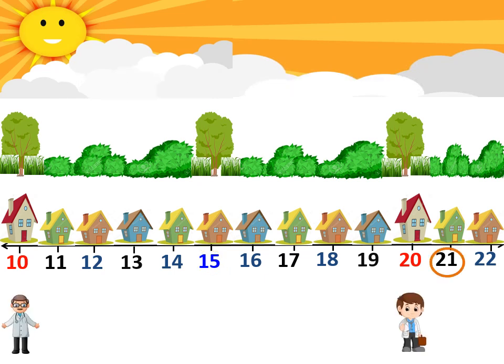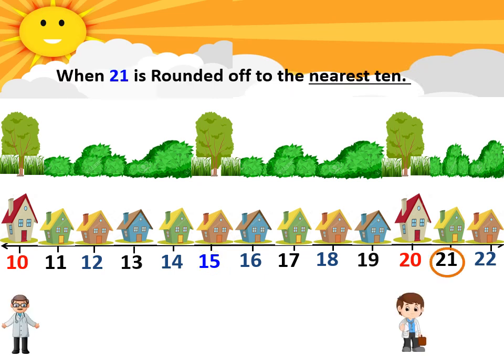Let's practice with number 21. Let's look for the nearest 10s to number 21. As we can see, it is closer to 20. Thus, 21 is rounded off to 20.